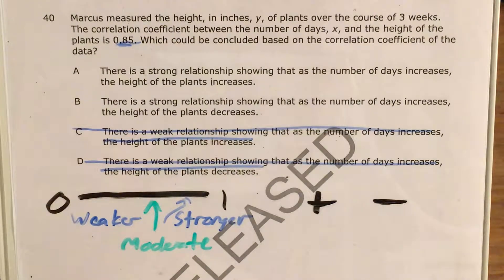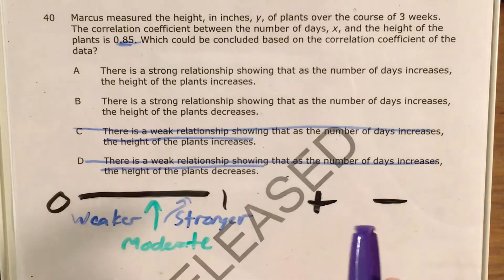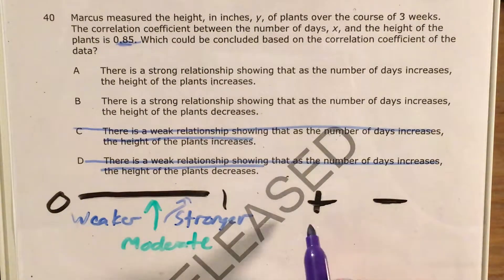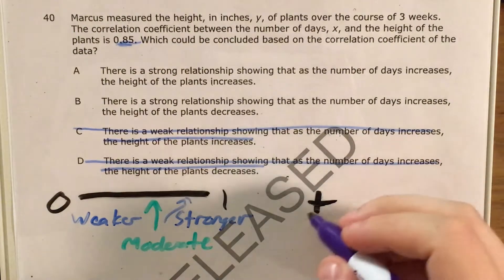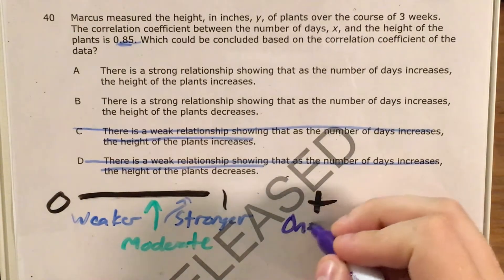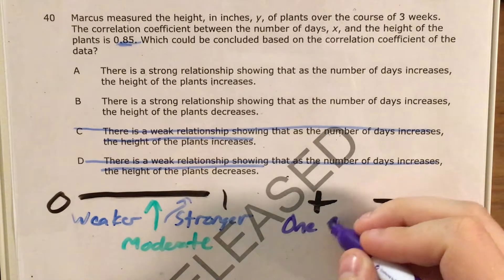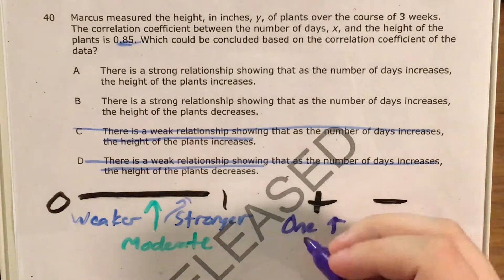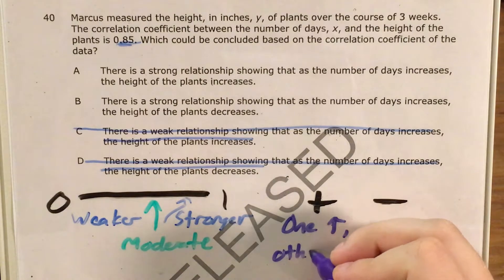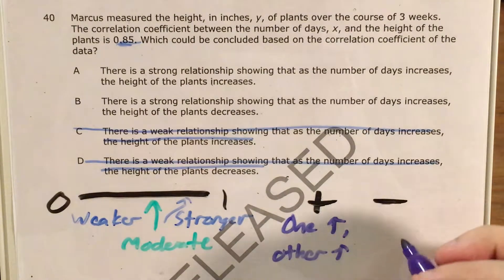So now we need to talk about the sign of the correlation coefficient. Of course, like any number, it can be positive or negative. Positive shows a positive relationship. But the meaning of a positive relationship means that as one of our quantities increases, the other one increases as well.